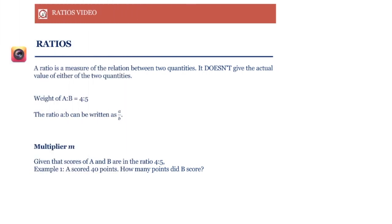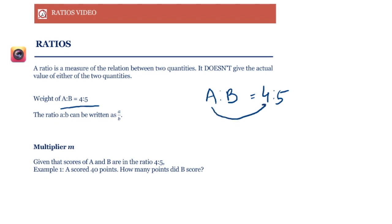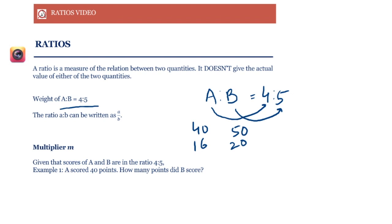A ratio is a measure of the relation between two quantities. It doesn't give the actual value of either of the two quantities — it just tells us the relation between them. For example, if the weight of A to weight of B is 4 to 5, it means for every 4 pounds of A we have 5 pounds of B. If A's weight is 40 then B's weight is 50. Ratios tell us the relation, not the actual weights.